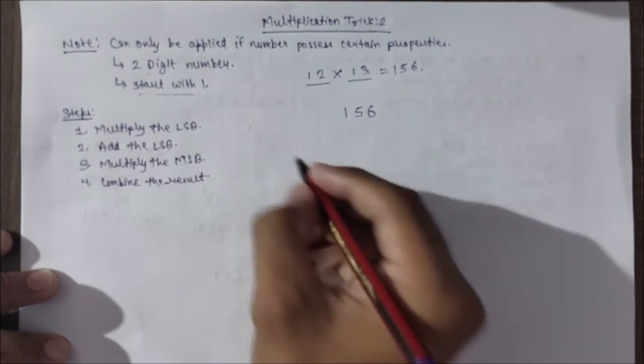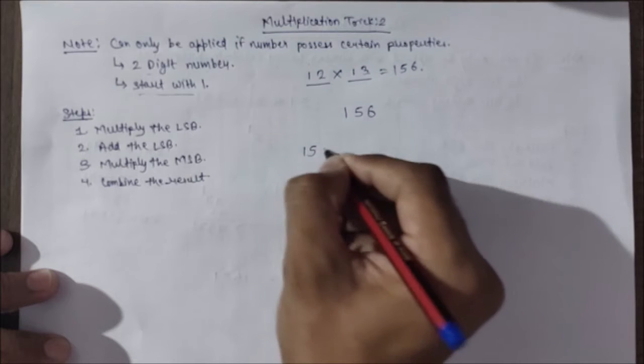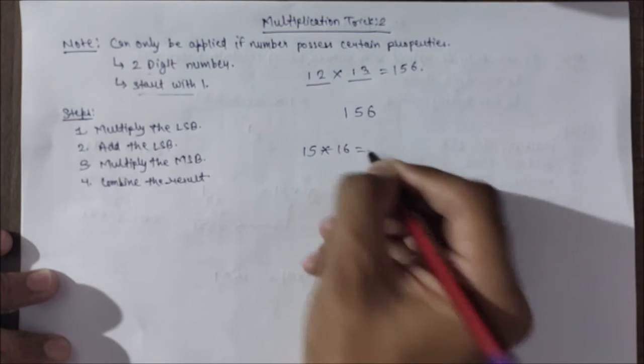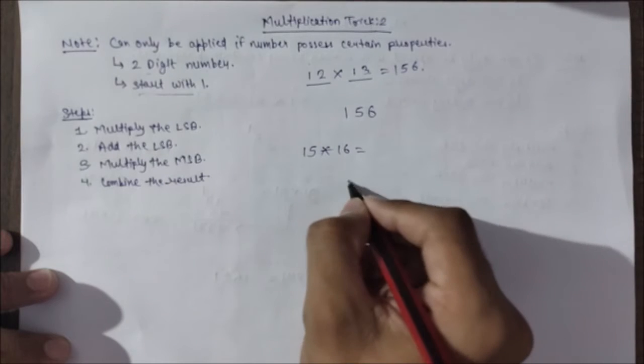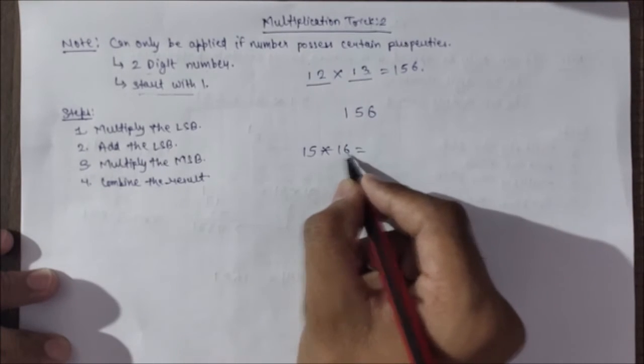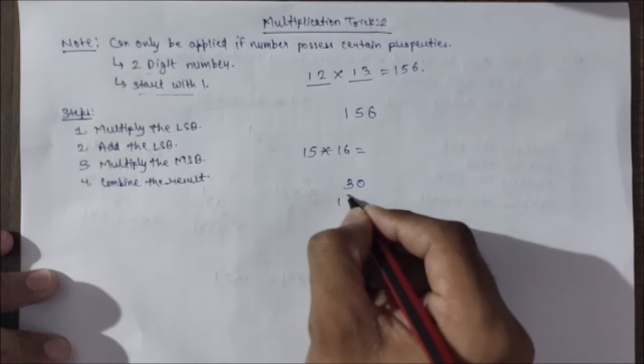Let's take one more example. Multiplying 15 with 16. Multiply the LSB: 5 times 6 is 30. Adding the LSB: 6 plus 5 is 11.